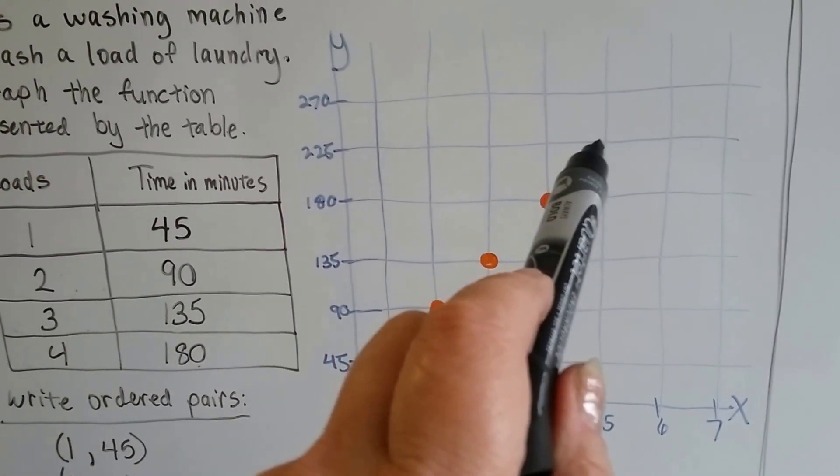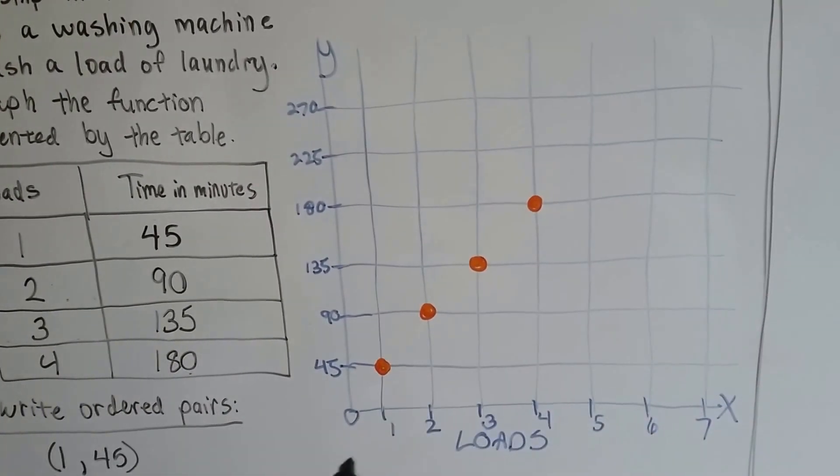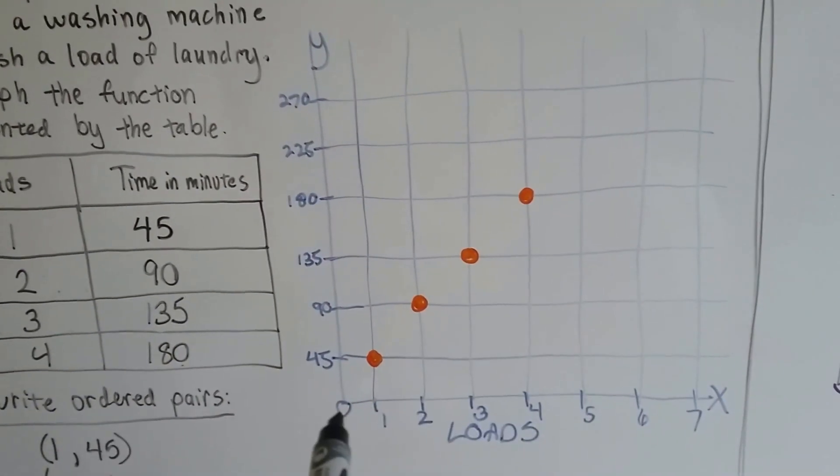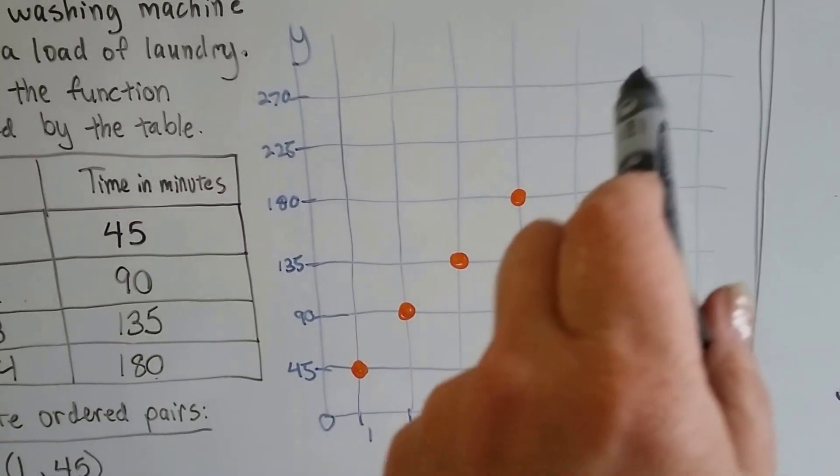So we could see what 5 loads is right away, because we can see the pattern of what's happening here. We could just draw a line. And 0 loads would be 0 minutes, wouldn't it? That makes sense.